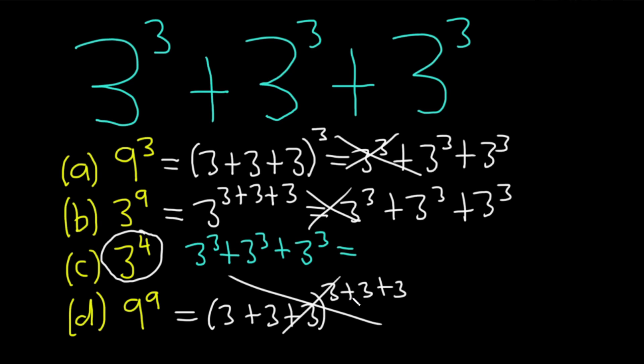And the way I did it, and maybe you think it's weird, but this is how I did it. I looked at this and I thought, okay, there's one of these, there's two of these, there's three of these. So there's three of these. So this is three times 3 cubed.